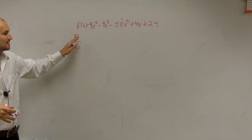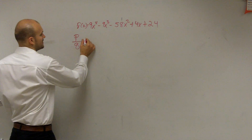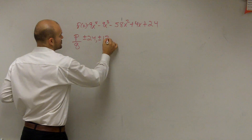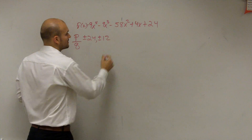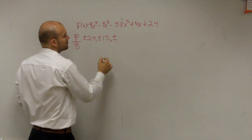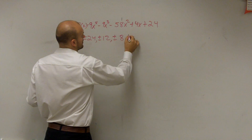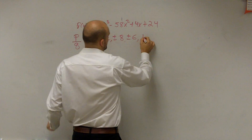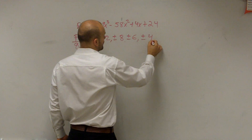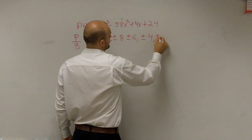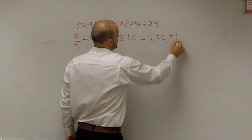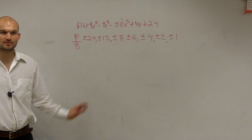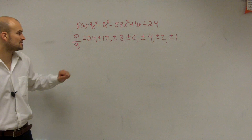So let's look at all the factors of p over q. That's going to be plus or minus 24, plus or minus 12, plus or minus 8, plus or minus 6, plus or minus 4, plus or minus 2, plus or minus 1. It's all the factors — every single number that divides into 24.